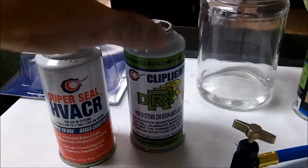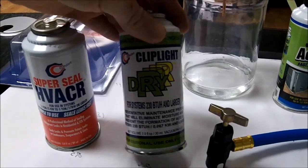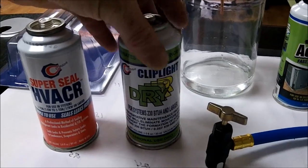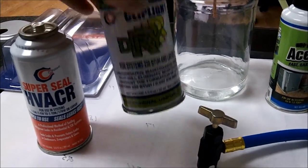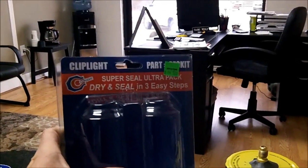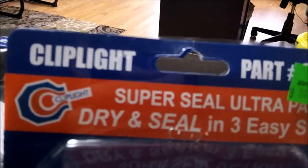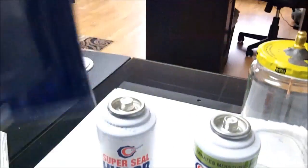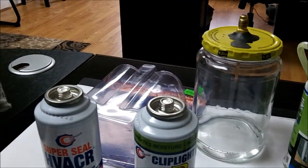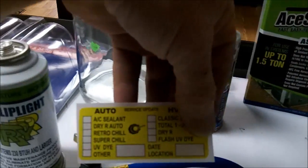When you put it in, you're supposed to use a drying agent to keep moisture out of the system. It comes in a package like this - I got it from Johnstone. What comes in the pack is those two cans, some instructions, and a sticker.